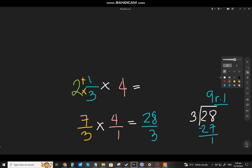Now, the quotient will be the whole number. The remainder will be the numerator. And, the divisor will be the denominator.